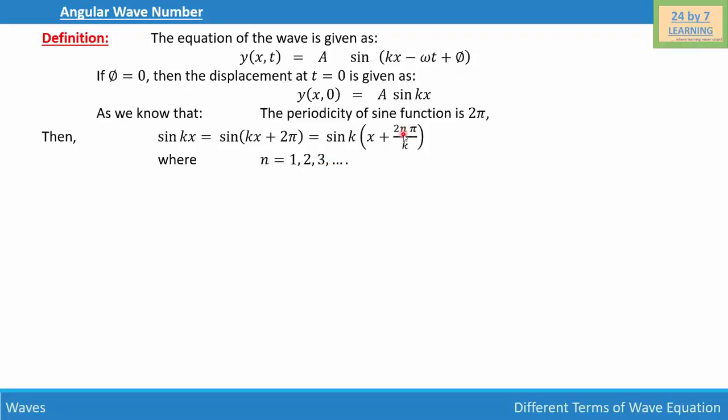And the reason why we are taking this n here is because we want to write a standard conversion of a sine function. Now, as you can see, the displacement at point x, which is sin kx and (x plus 2n pi over k), which is this one right here.